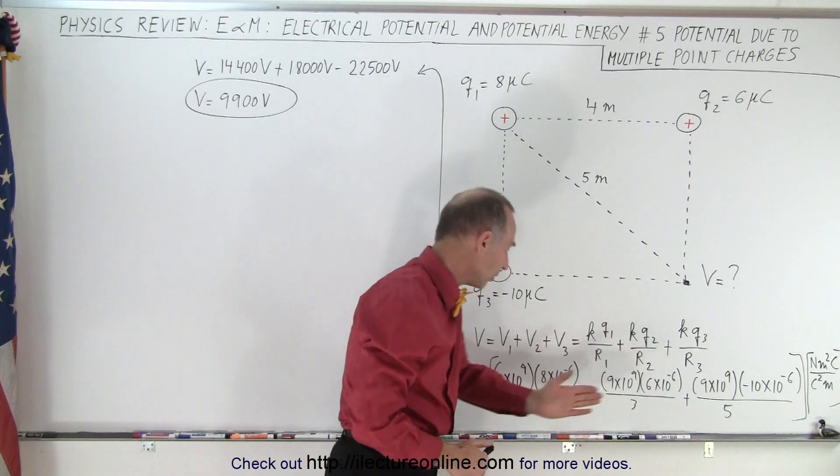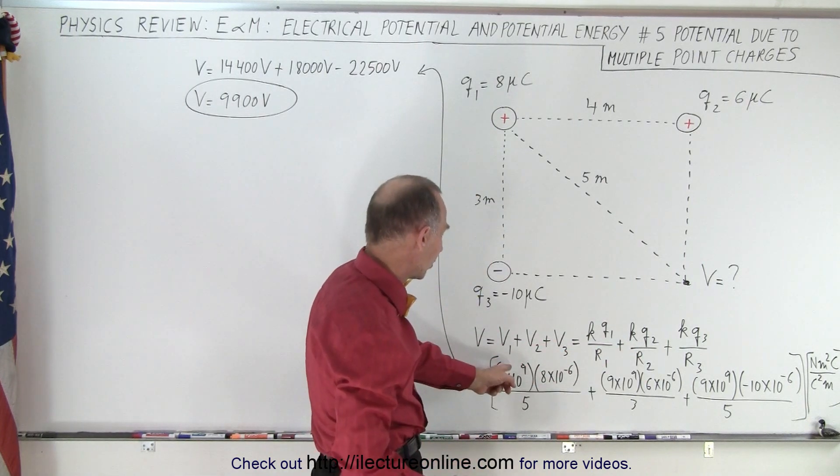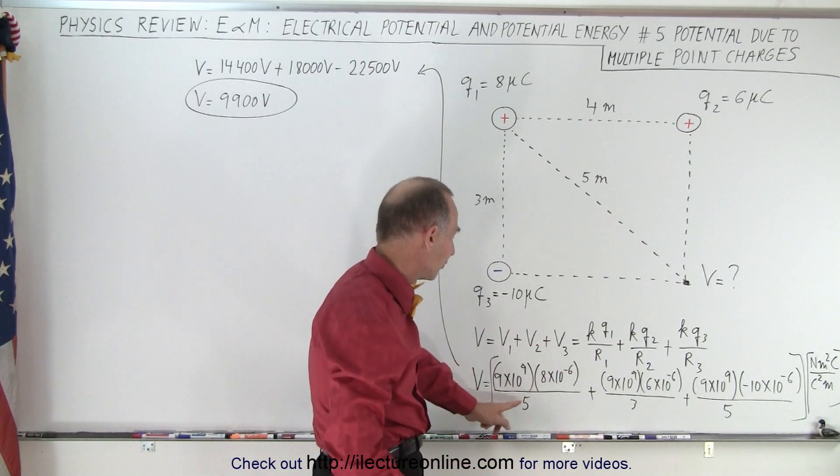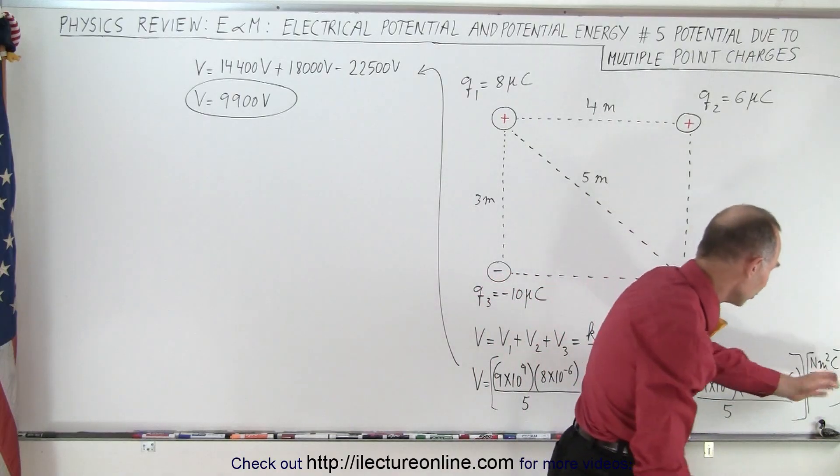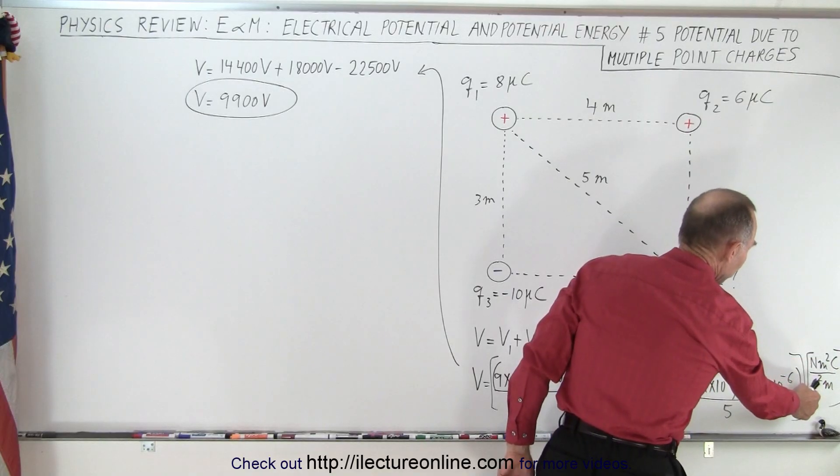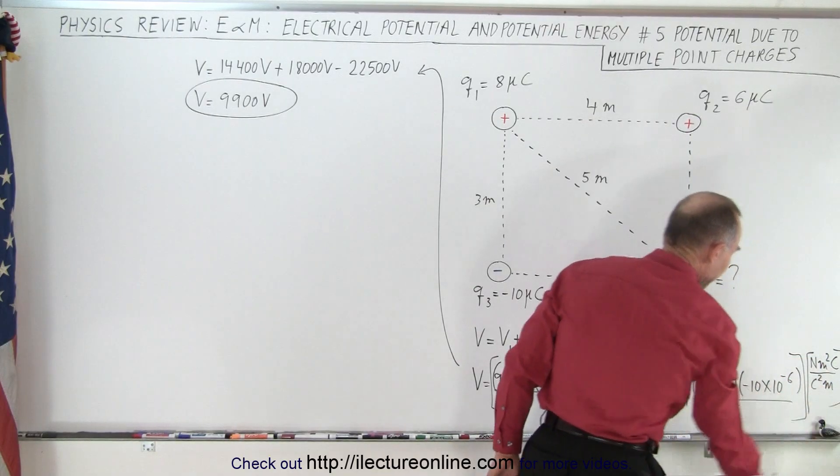So we add the three voltages together: k times q divided by distance, k times q divided by distance, k times q divided by distance. Each of those has units of newton meter squared per coulomb squared, times coulomb, divided by meters.